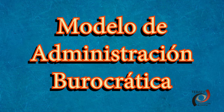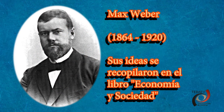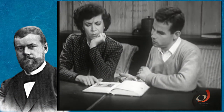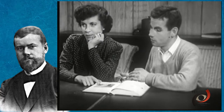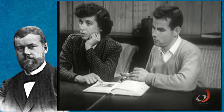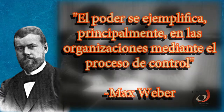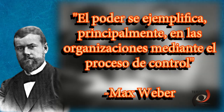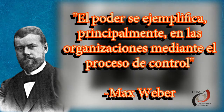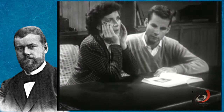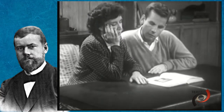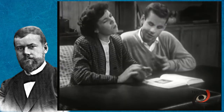La administración burocrática tiene como principal representante a Max Weber, quien fue el primero en describir el concepto de burocracia como una forma ideal de estructura organizacional. Weber definió la administración burocrática como un ejercicio de control sobre las bases del conocimiento, y es famosa su frase: «El poder se ejemplifica principalmente en las organizaciones mediante el proceso de control». Sus aportes incluyen un enfoque de sistema cerrado, énfasis en la planeación y control, y el establecimiento de tipos de sociedades y autoridades.